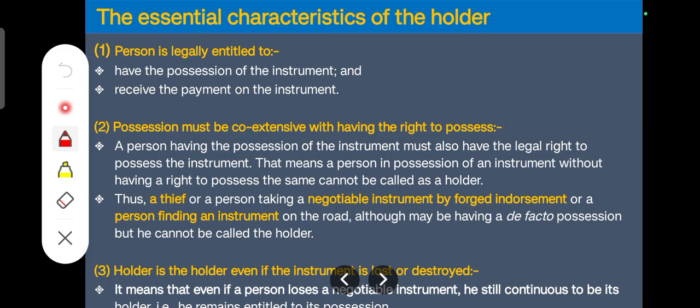To prove yourself to be a holder in the court of law, a person must have the following essentials. First, the person should have possession plus the right to receive payment. Second, the possession must be co-extensive with having the right to possess — meaning the person having possession must also have a legal right to recover the amount.